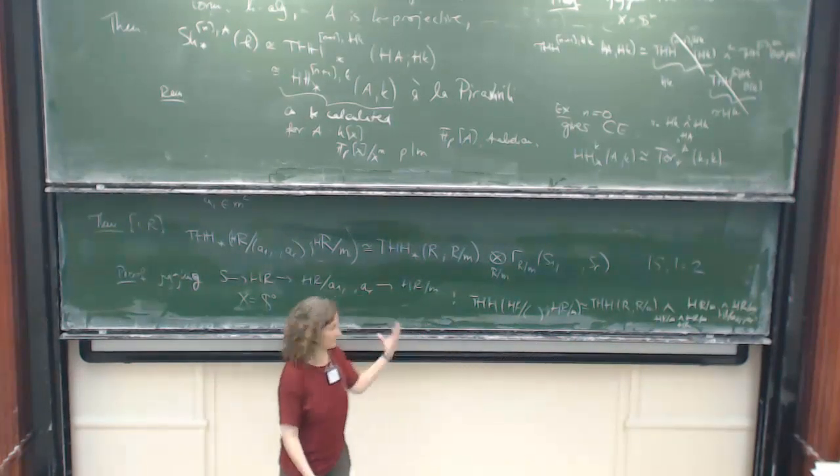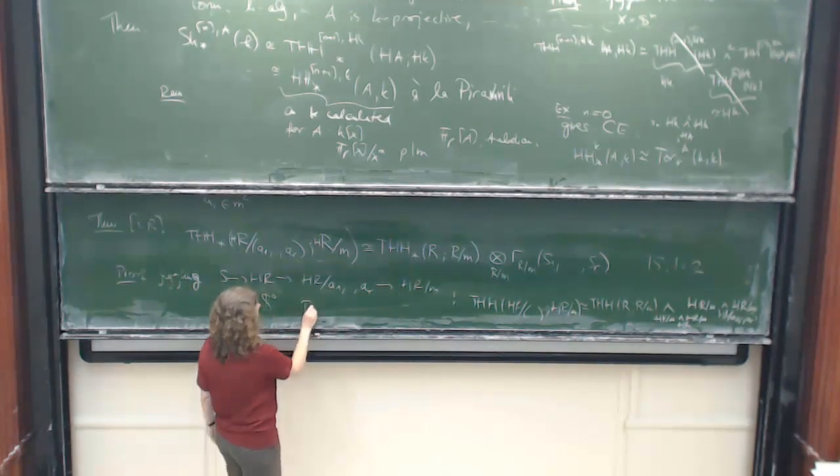So now you have S goes to HR goes to HR quotient goes to the residue field, and we take X to be S0. Then juggling gives me that THH of this regular quotient with reduced coefficients is THH of R with reduced coefficients, and then I get two S0 terms, but they are just given by tensors. So here I have to take A over C, so this is HRM smash HRM over HR, and here I get the same thing, but working relative to the more difficult ring.